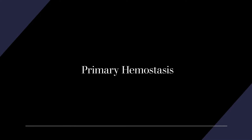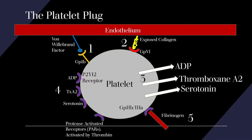Starting with primary hemostasis, otherwise known as the platelet plug. Here you can see a diagram of the platelet and all the steps that go into it. We have the endothelium up here, and the first step is that von Willebrand factor is secreted both from the platelet and the endothelium — from Weibel-Palade bodies as well as alpha granules — and von Willebrand factor connects the endothelium to the GP1B receptor.